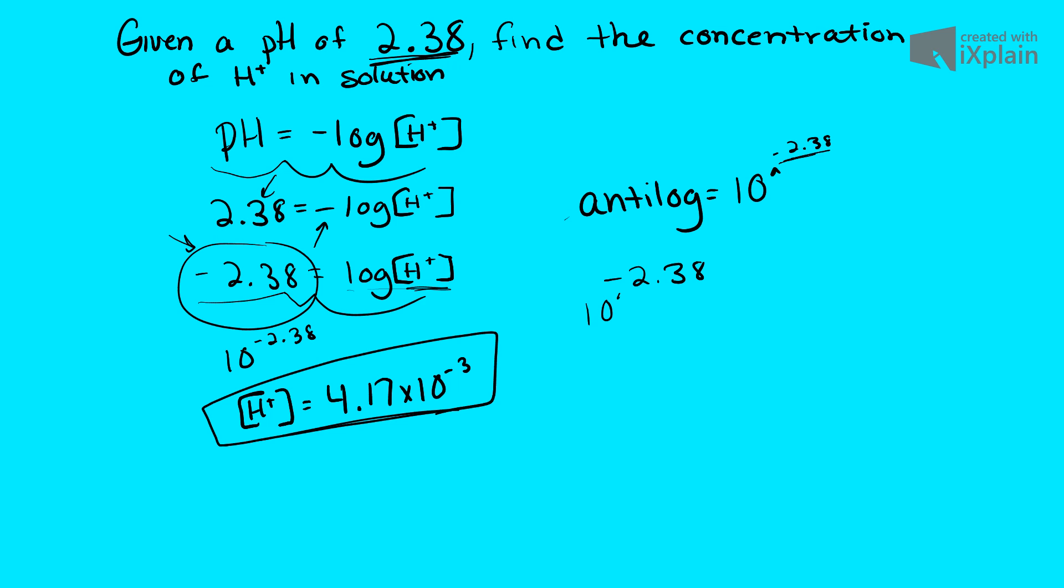And I just take 10 and raise it to that power. So 10 to the negative 2.38 power. That's the, in a nutshell, way to do it. It's going to be the same every time if all you're looking for is the hydrogen ion concentration.